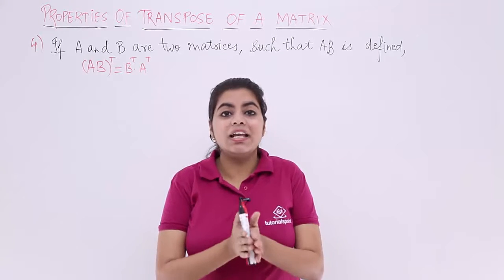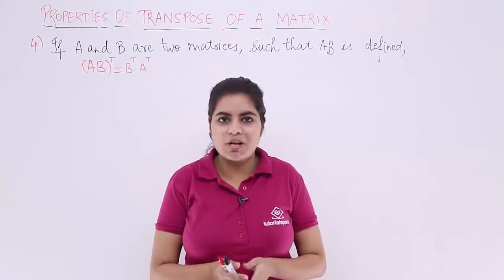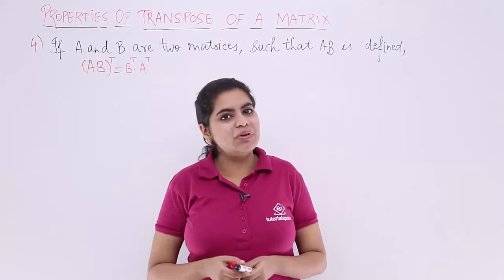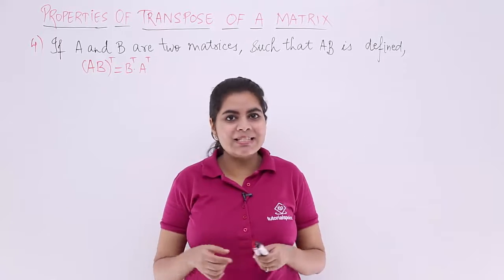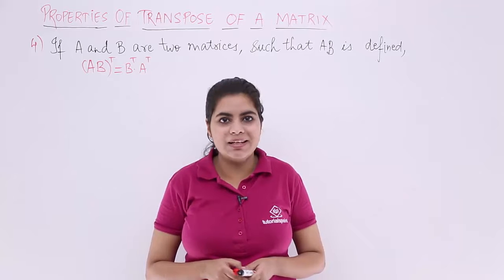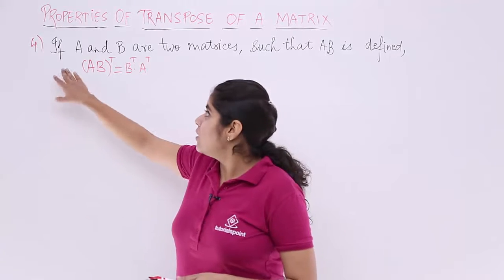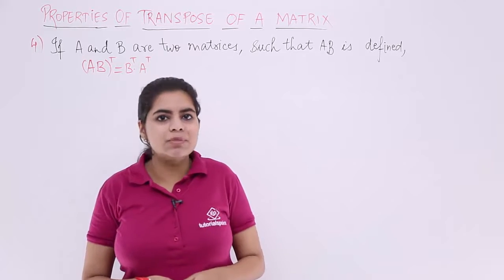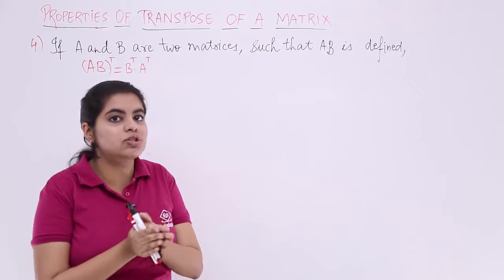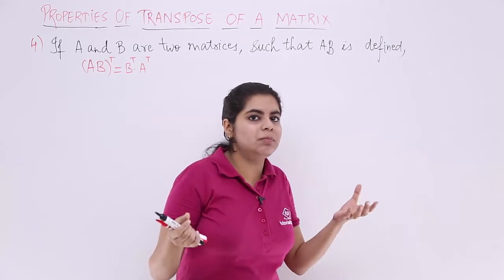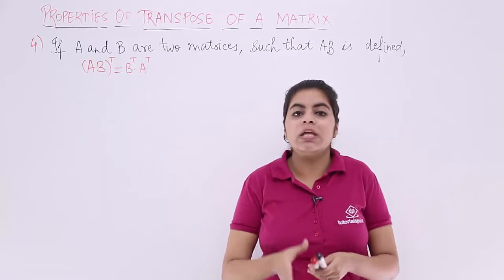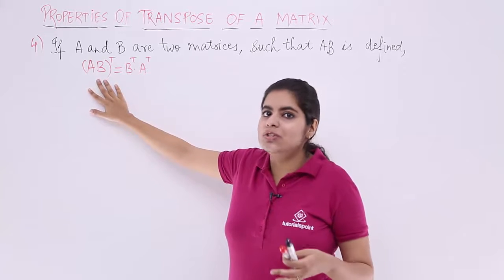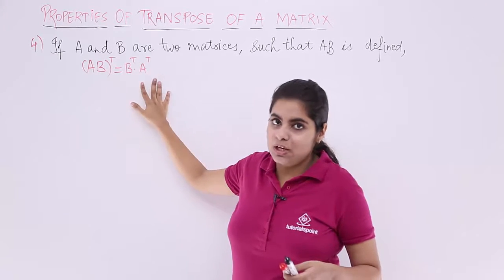In this video, let's see another property based on the transpose of a matrix. We already know what transpose is and have seen a few properties. In this video, we are going to see another property. If A and B are two matrices and the product AB is also defined, then the property says AB whole transpose is equal to B transpose times A transpose.